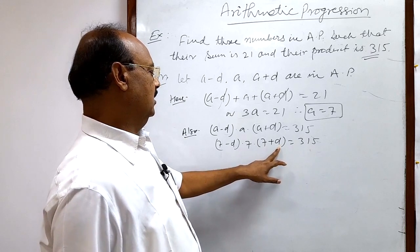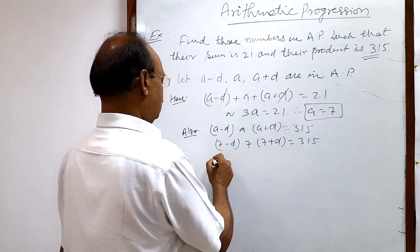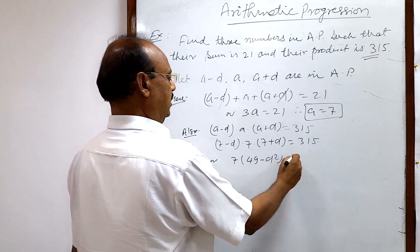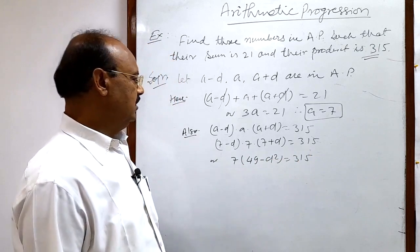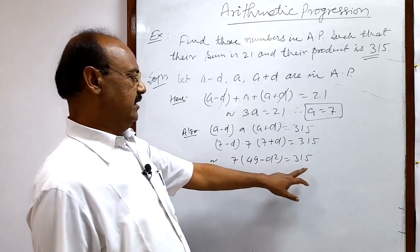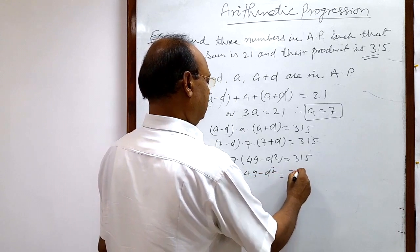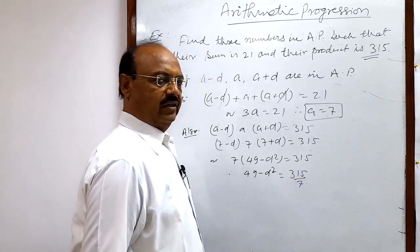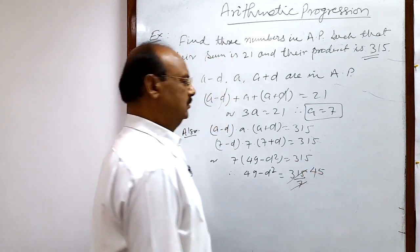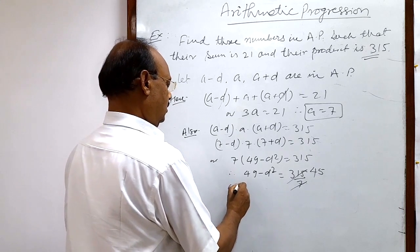Simplifying further: (7 minus d)(7 plus d) uses the identity (a minus b)(a plus b) equals a squared minus b squared, giving 7 squared minus d squared. So 7 times (49 minus d squared) equals 315. Transposing 7 to the right-hand side: 49 minus d squared equals 315 divided by 7, which equals 45.